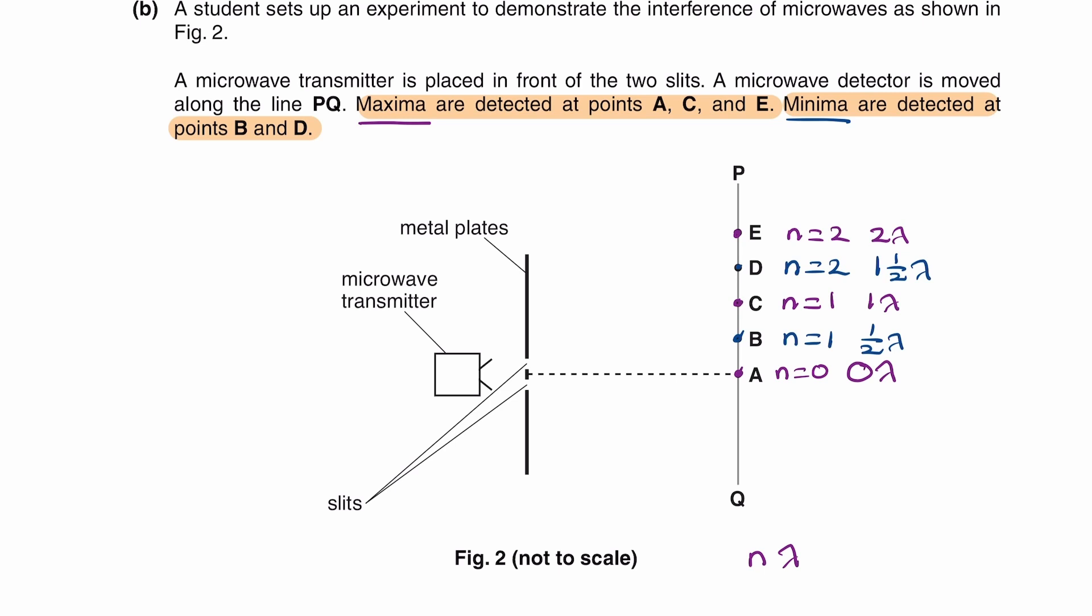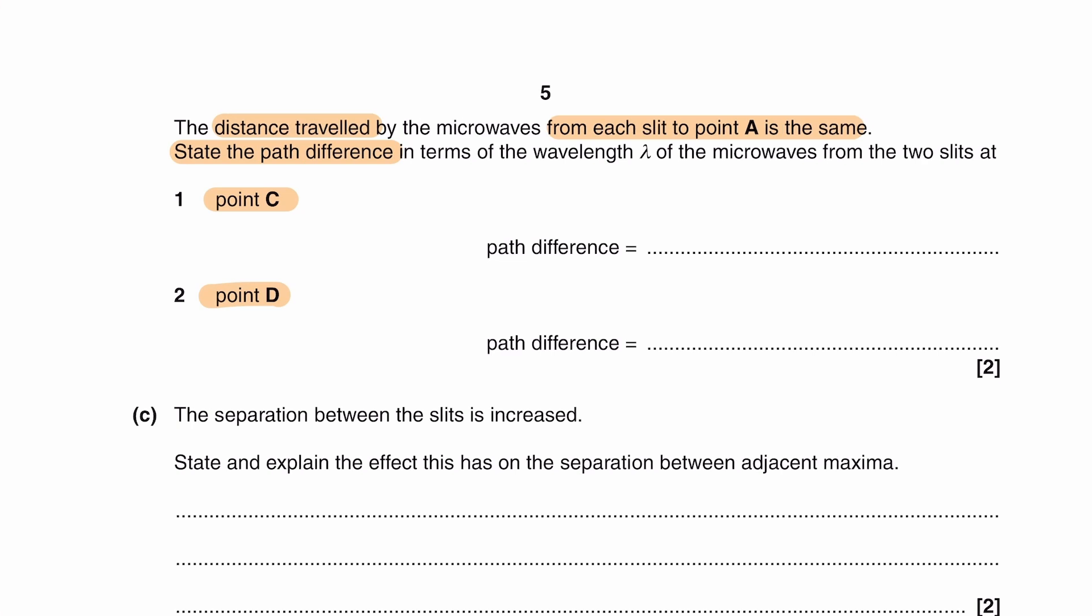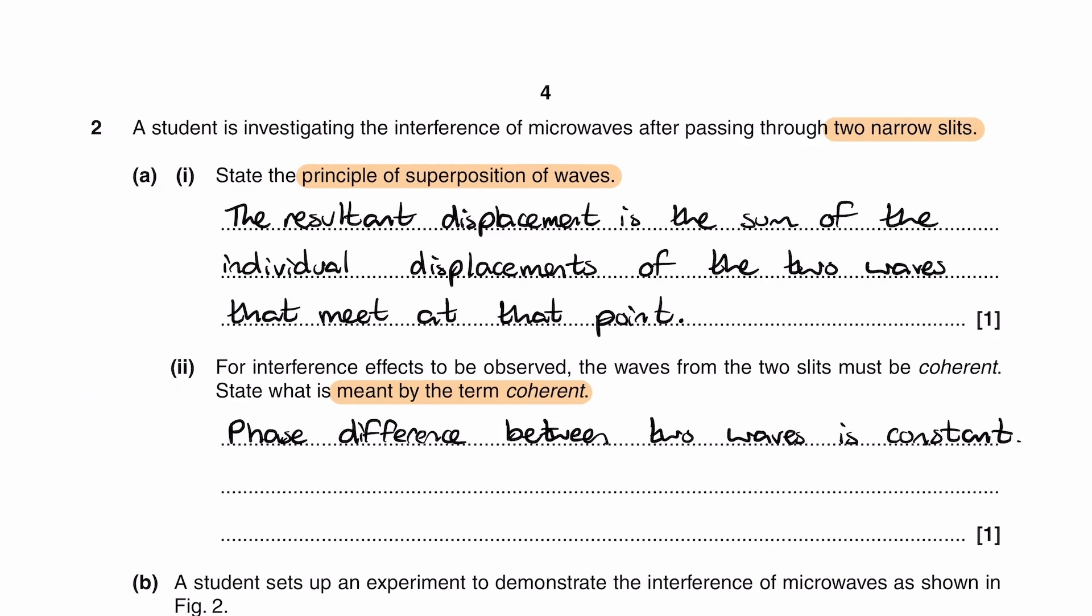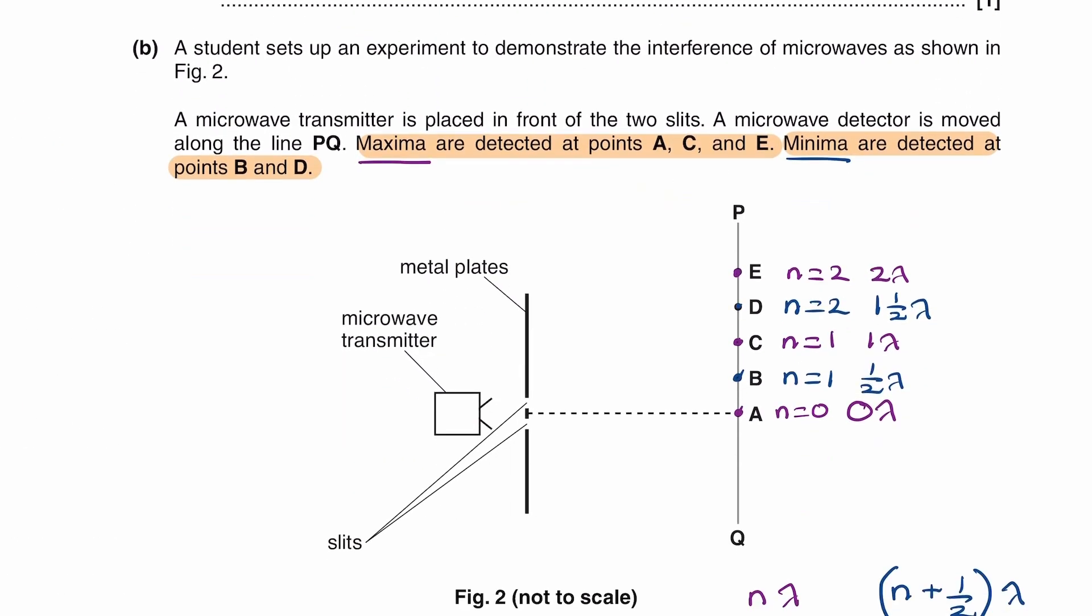So in general, when the path difference is N plus a half lambda, where N is just an integer, N doesn't have to be the actual order number, it's just an integer. When the path difference is N plus a half lambda, that's when you have max destructive interference, which would correspond to these things here. So then going back to the question, it's asking us for the path difference at point C and at point D in terms of wavelength. So at point C, the path difference was 1 lambda, and at point D, the path difference is 1 and a half lambda.